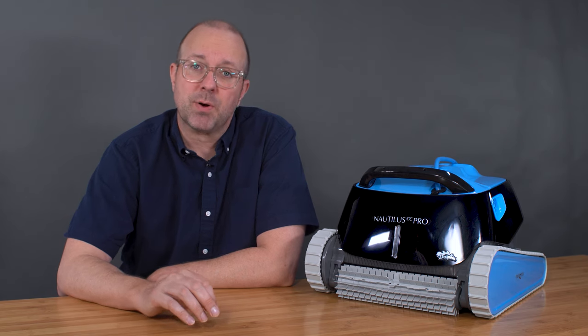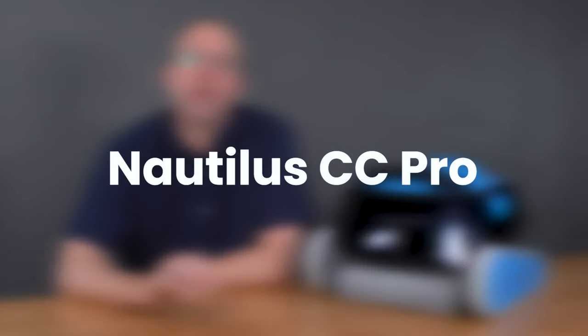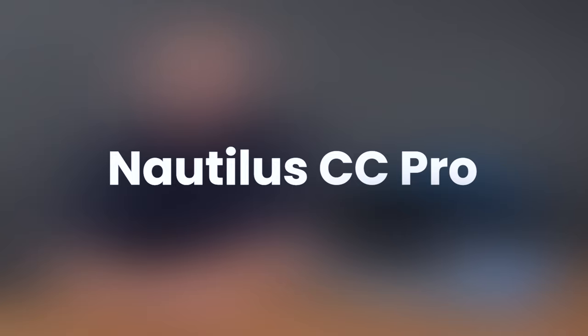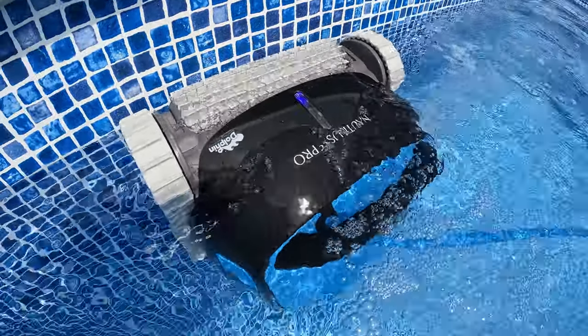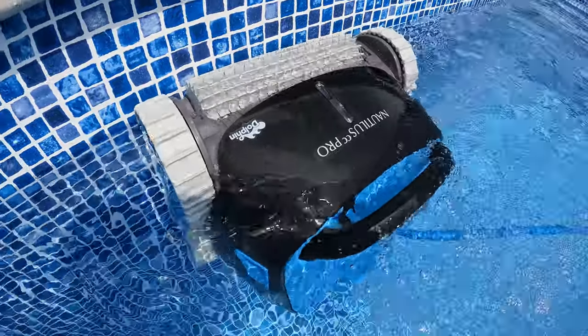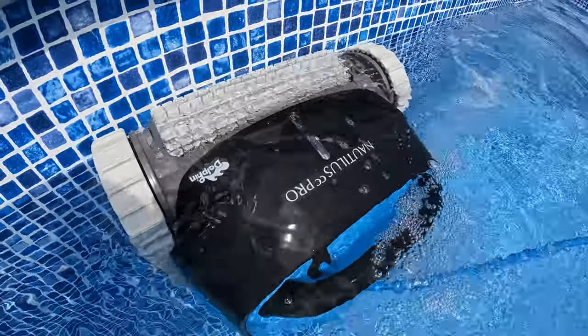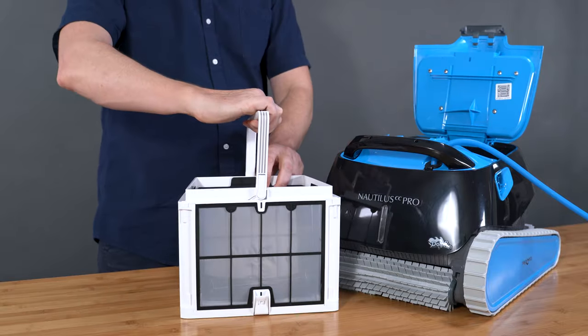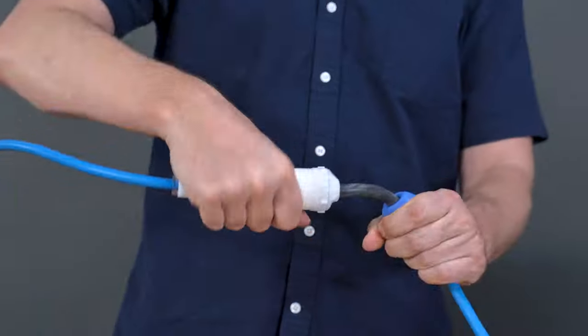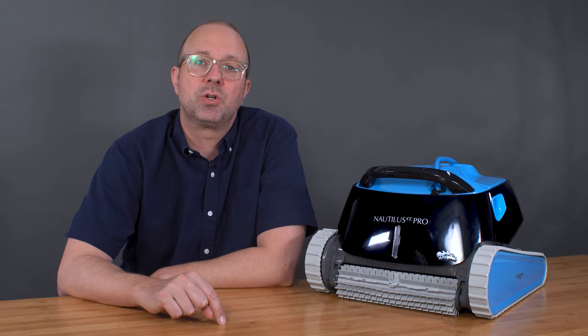The next robot is also part of the Nautilus CC line: the Nautilus CC Pro. The Pro is the slightly more expensive version of the CC Plus that can now clean from the floor to the waterline of pools up to 50 feet. It includes the standard fine-filter basket, a two-hour cleaning cycle, an anti-tangle swivel, and a two-year warranty.